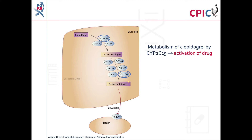Clopidogrel is a pro-drug that is metabolized into its active form by the enzyme CYP2C19. The active metabolites of clopidogrel inhibit the P2RY12 receptor, resulting in the inhibition of platelet aggregation.